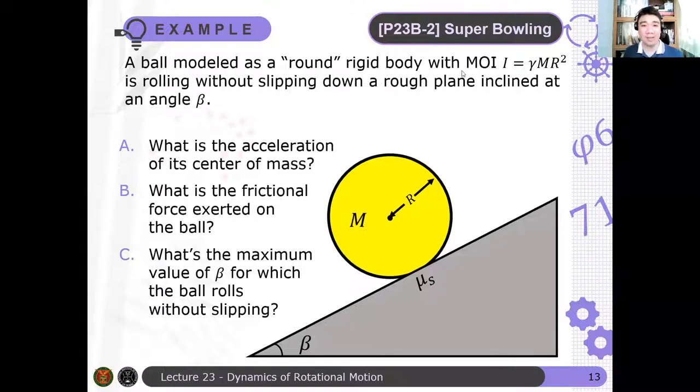Okay, so our next problem is super bowling. A ball modeled as a round rigid body with moment of inertia gamma MR squared is rolling without slipping down a rough plane inclined at an angle beta.